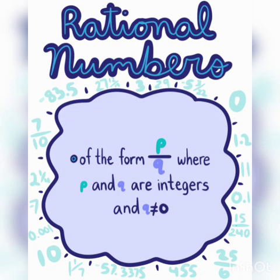Rational Numbers. What is meant by Rational Numbers? Rational Numbers is nothing but it is in P by Q format, where Q is not equal to 0 and P and Q values are integers. It will be like P by Q where denominator is not equal to 0. Then numerator and denominator will be integers. It can either be positive or negative. This is the basic definition of Rational Numbers.